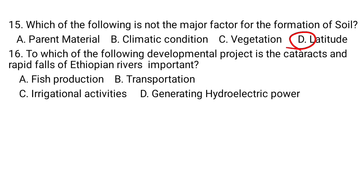Question number 16. To which of the following developmental projects are the cataracts and rapid falls of rivers in Ethiopia important? A. Fish production, B. Transportation, C. Irrigational activities, D. Generating hydroelectric power. Generating hydroelectric power is the major advantage of the cataracts and rapid falls of Ethiopian rivers.